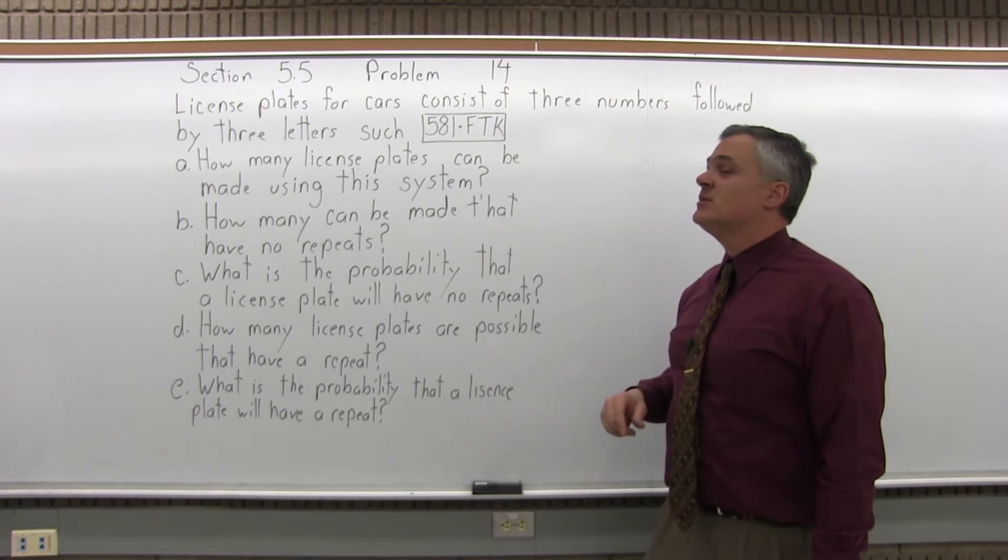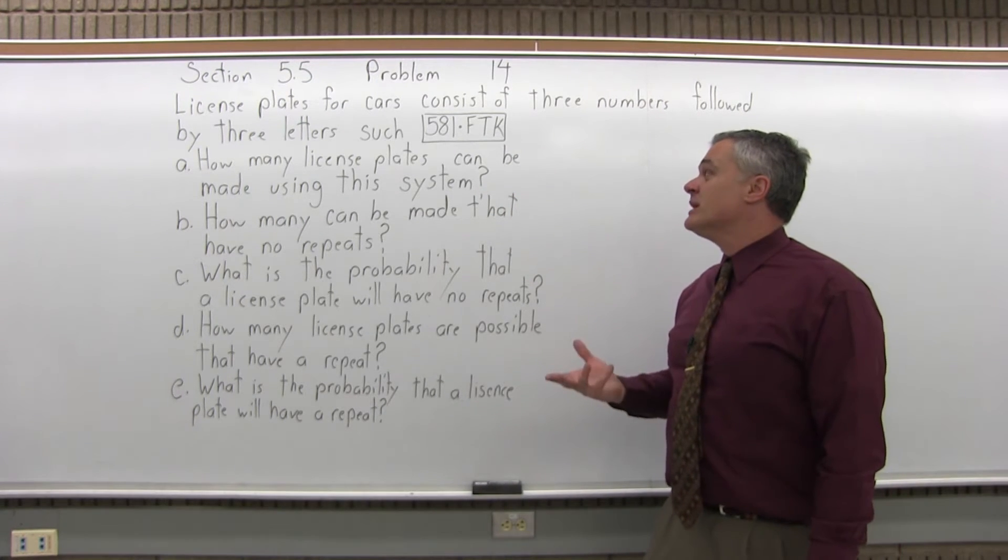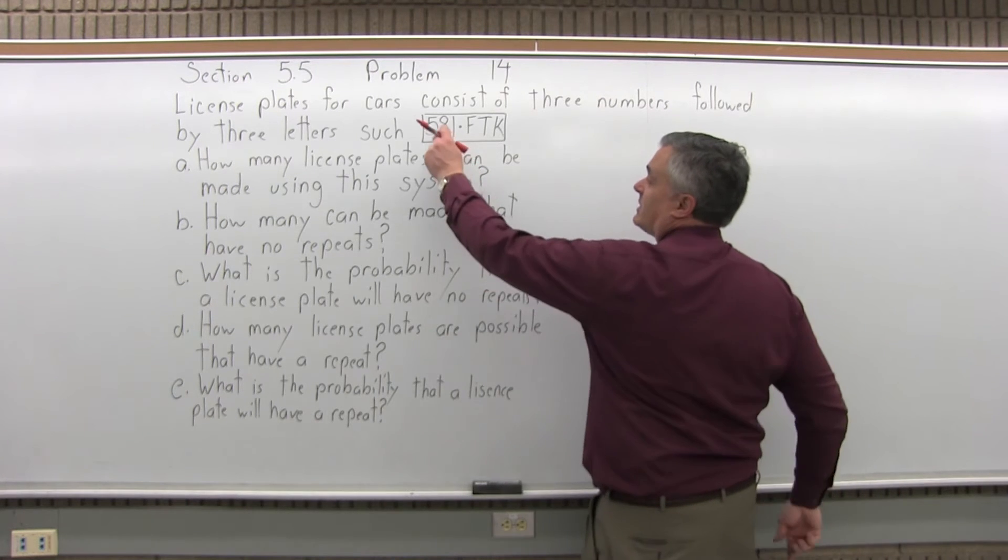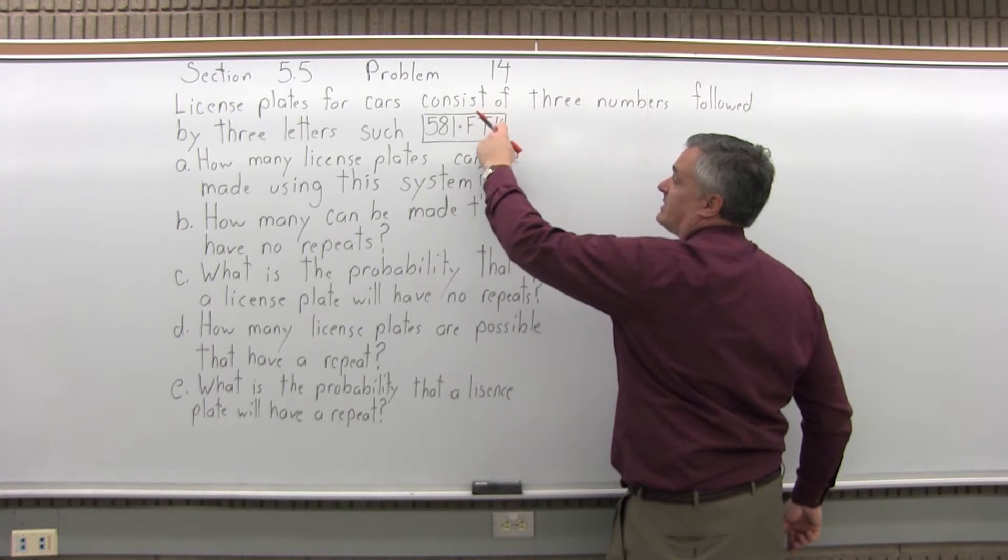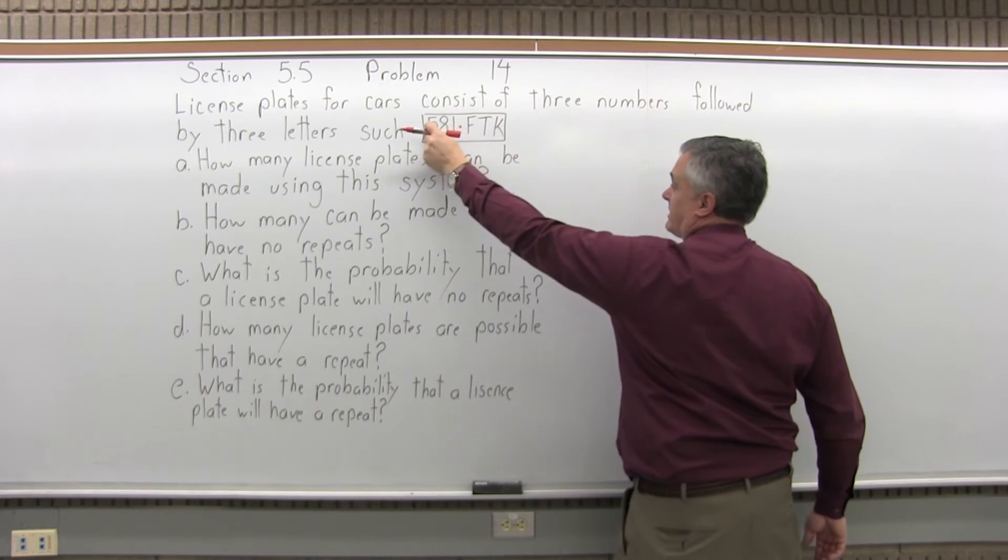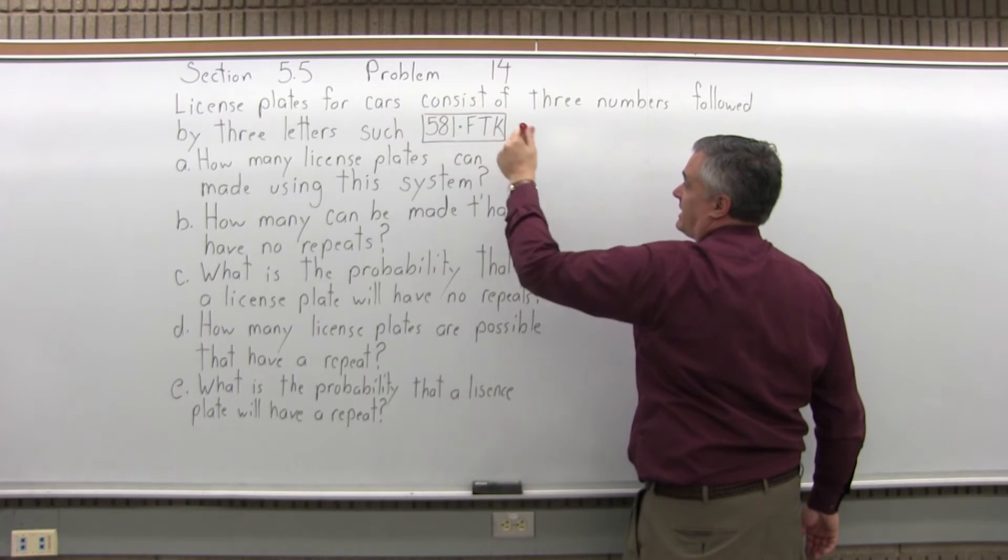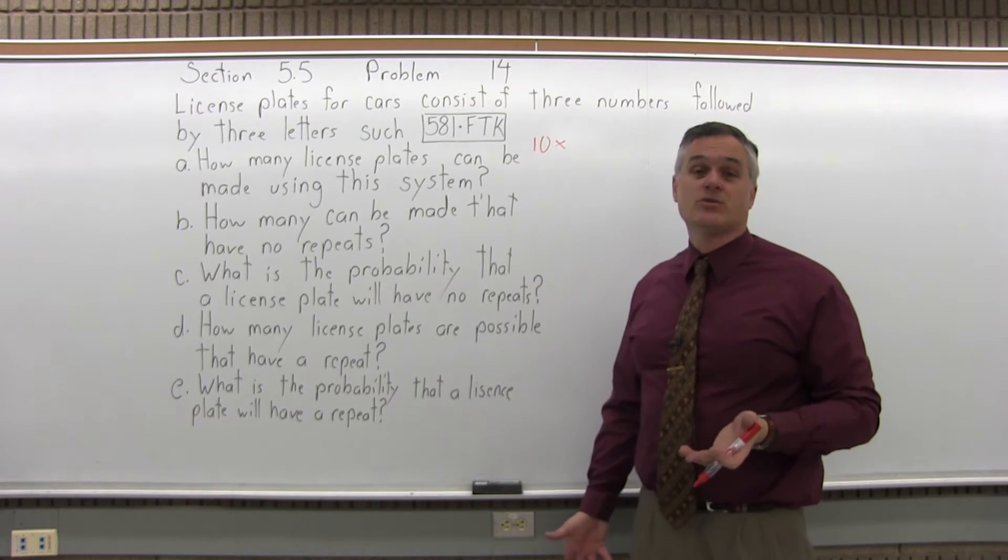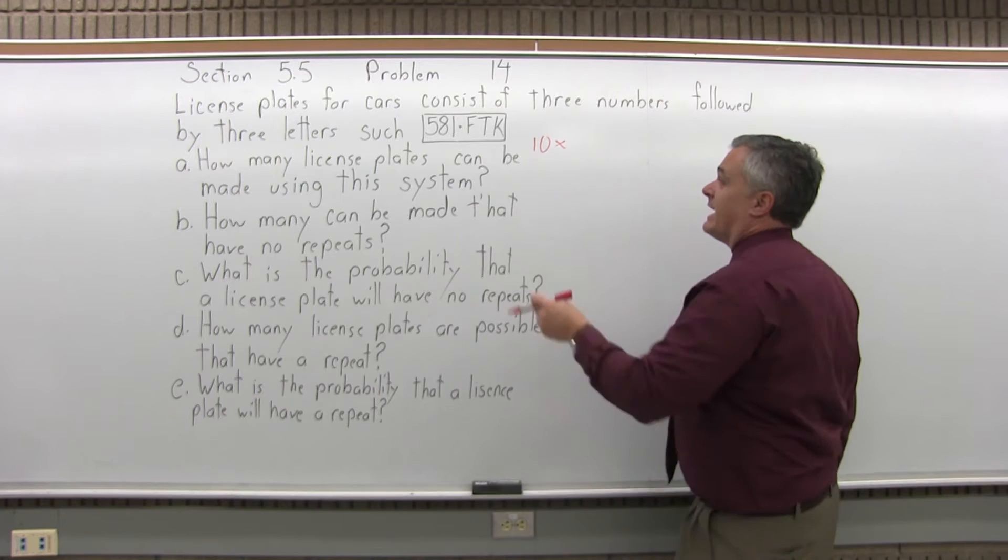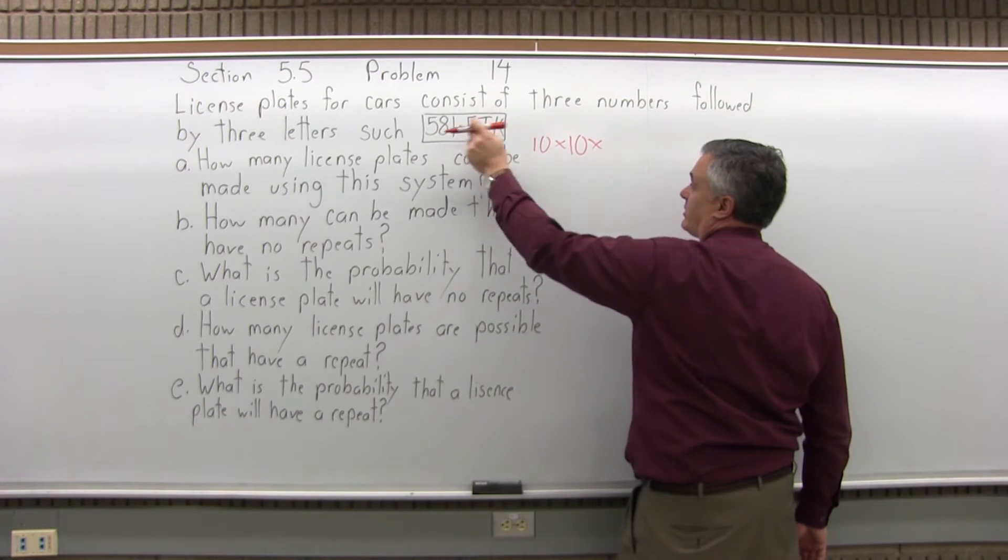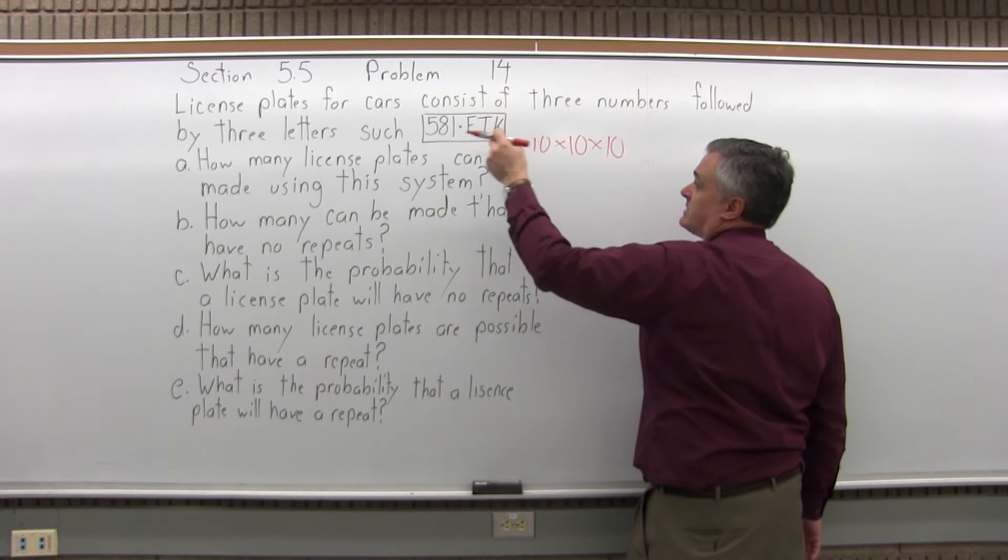How many license plates can be made using this system? Again, this is an example of using the multiplication principle. What you have here is a six-step process. The six steps are choosing the different values for your license plate. The first step, choosing the first digit, it's a number, so you have ten choices because your ten choices are zero through nine. Don't forget zero. For the next position, you also have ten choices because it's another number. In the third choice, you have ten digits.